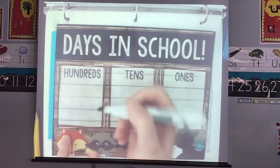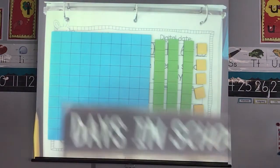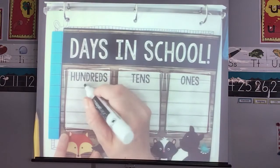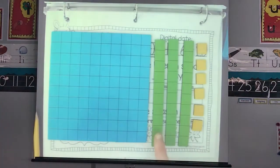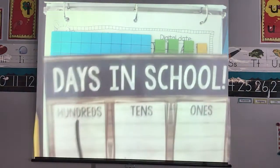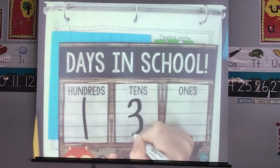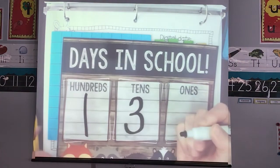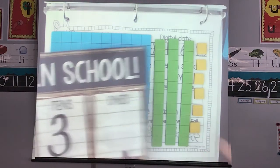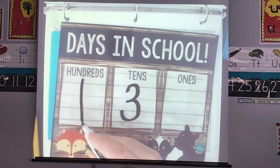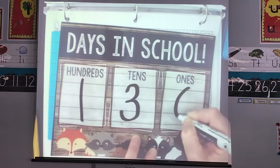In our hundreds place, we have one big blue 100 — one. We have three in our tens place. Count with me: one, two, three — three tens. And we have one, two, three, four, five, six ones. 136.